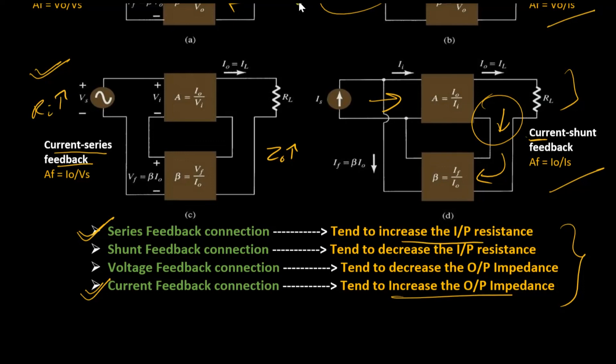Mathematically, we will see by what value they are basically increasing or decreasing. Therefore, in upcoming videos, we will see how the output impedance, input impedance, and the gain of all these networks vary when there is a feedback path present. Till then, thank you and have a nice day.